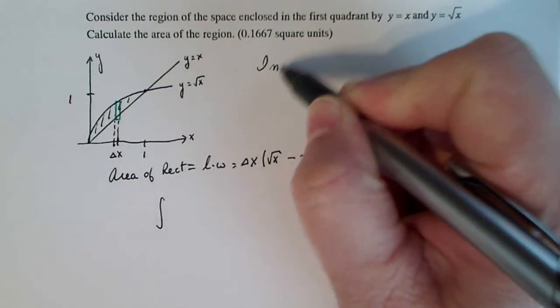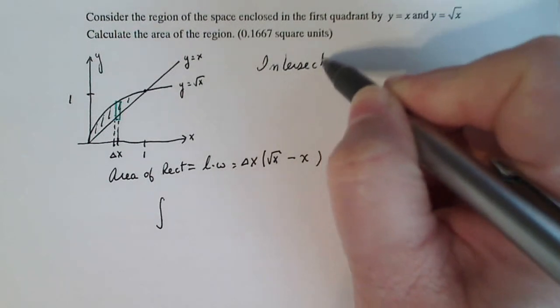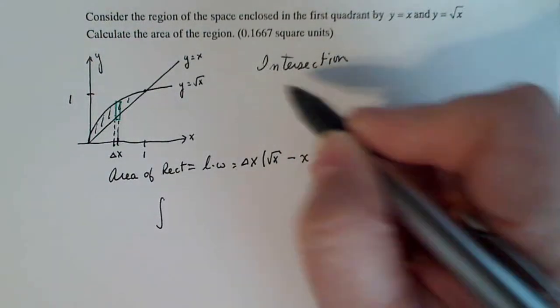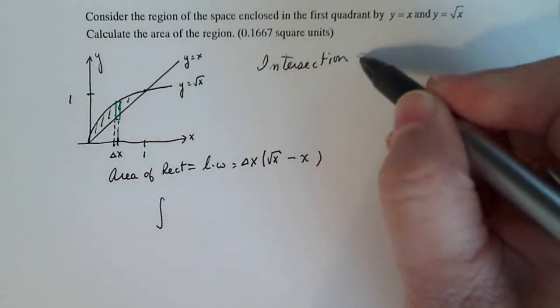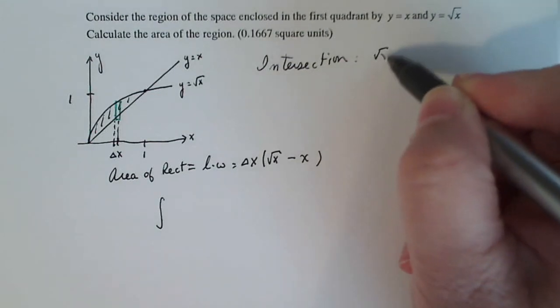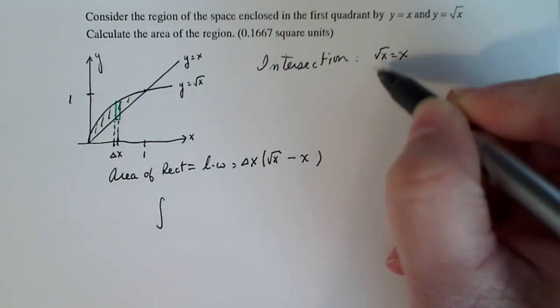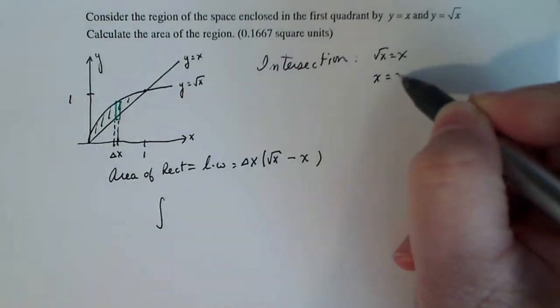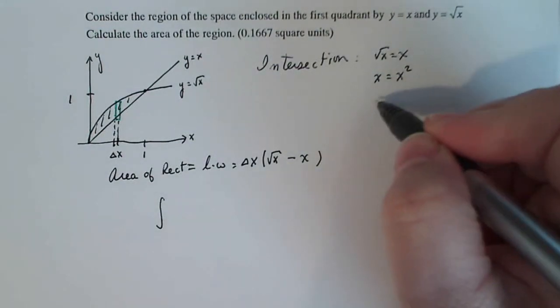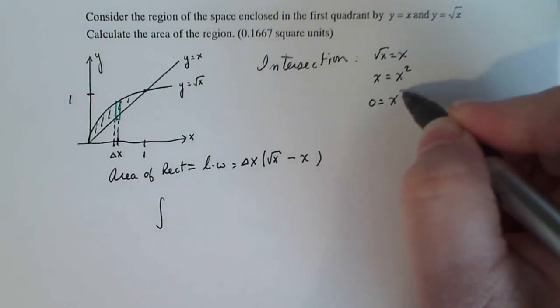I'm going to find the intersection of the two graphs. So that means solving the equation square root of x equals x. So if I square both sides, I get x equals x squared. Subtracting x from both sides.